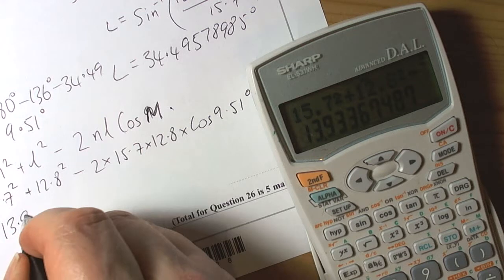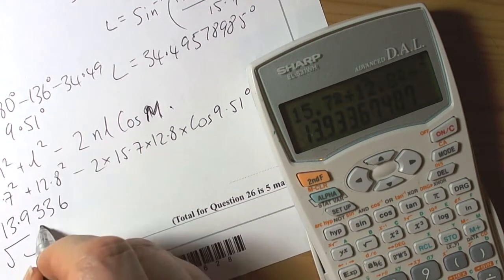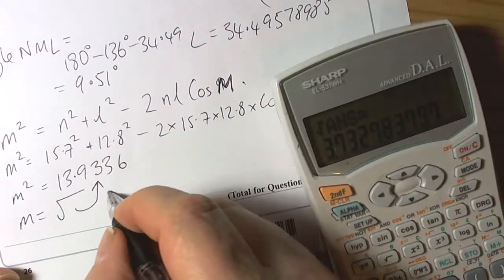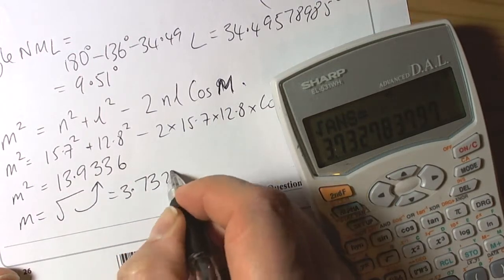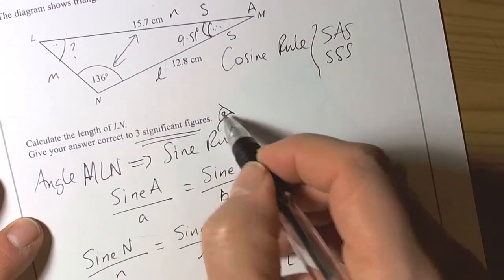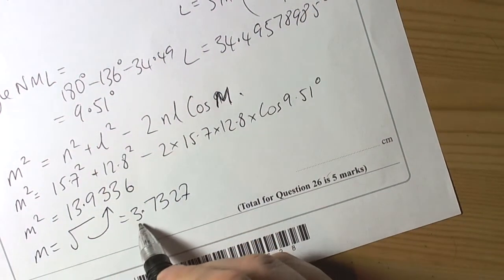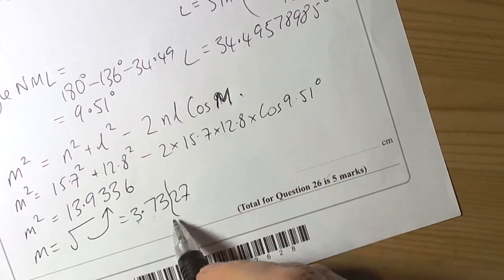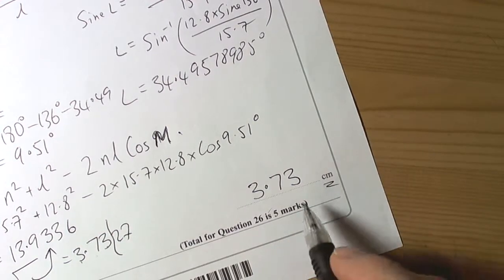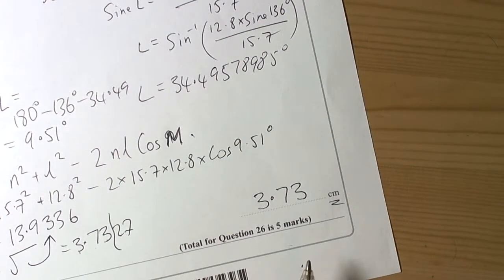So M squared is 13.9336, and M equals the square root of that. Square-rooting gives us an answer of 3.7327. We go back and check what the question actually wants — the answer to three significant figures. Counting from the left of the first non-zero digit: one, two, three — the digit after doesn't round up, so the answer is 3.73. The unit is already given, so we don't need to worry about that.